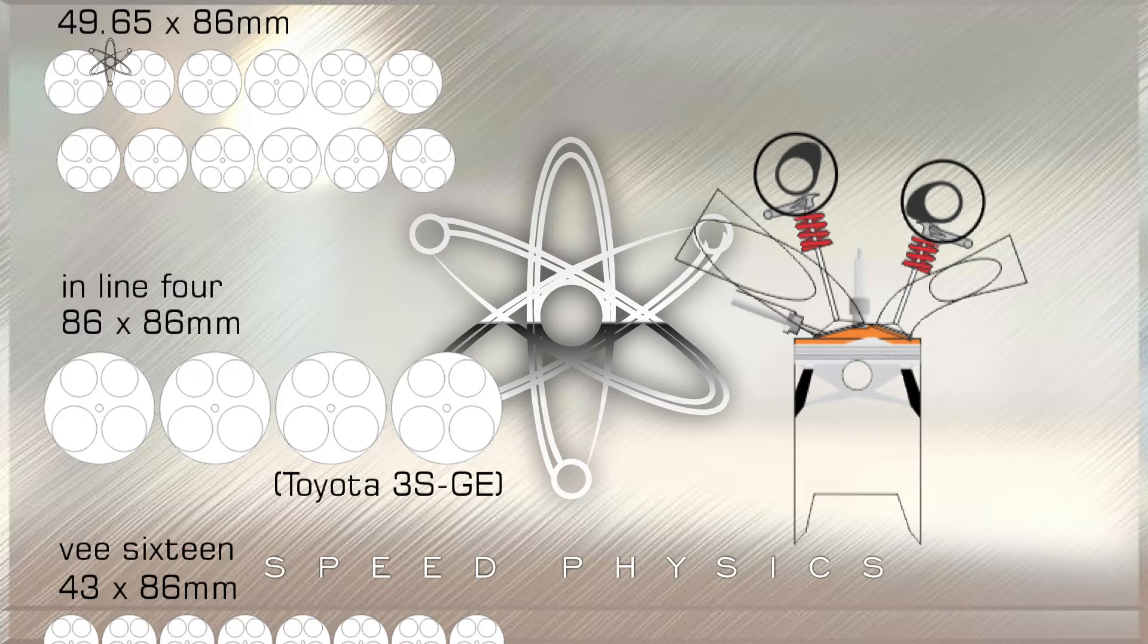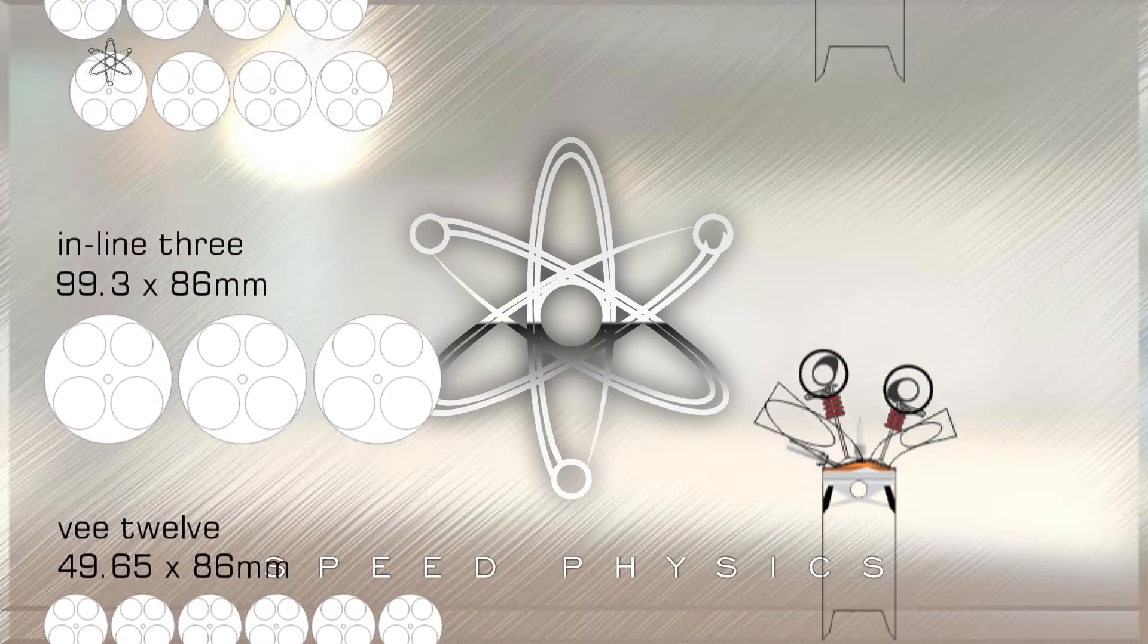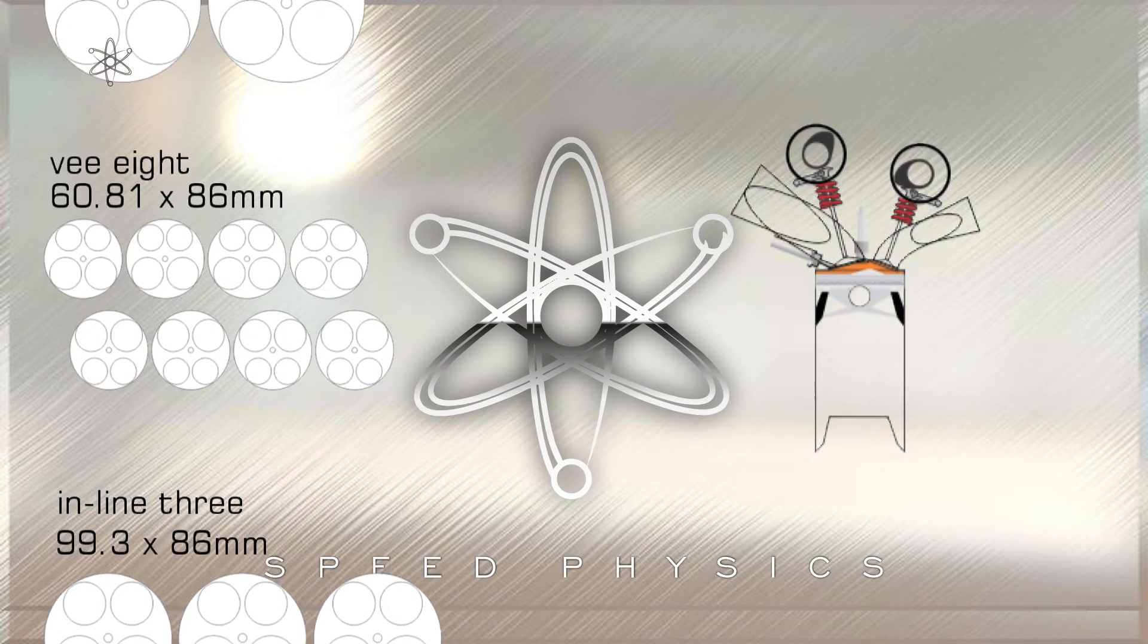Now double the amount of cylinders to eight cylinders for the same total cubic capacity but with the same 86mm stroke and we get the same piston speed at the same rpm. This means we have an 8-cylinder engine but operating similarly to its 4-cylinder contemporary in the rpm range. To achieve the same cubic centimeters its bore now is smaller at 60.81mm giving an under square bore stroke ratio of 0.7 to 1.